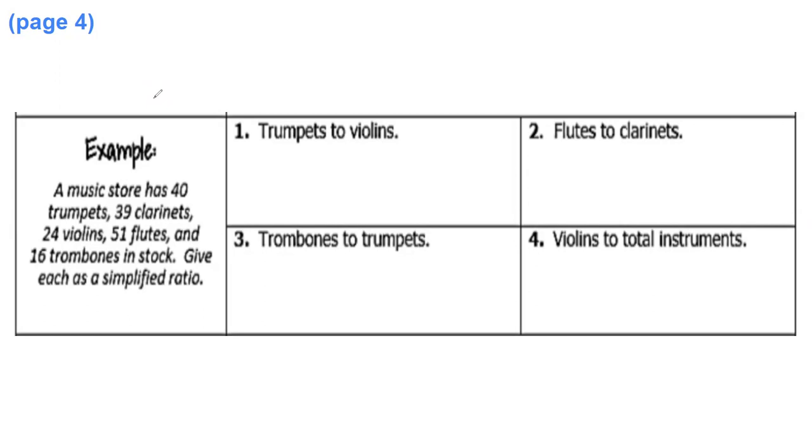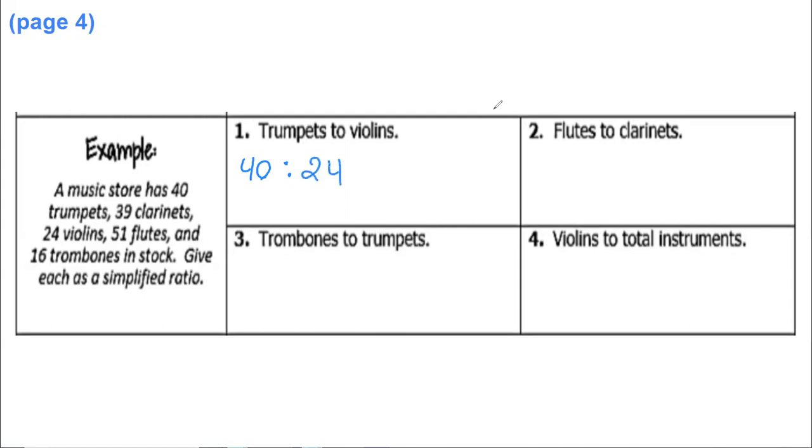So I'll kind of do one of each and then my favorite one for last. First we'll do colons: trumpets to violins. Well it says they have 40 trumpets to violins, we have 24. So a ratio would be 40 to 24, but you can simplify, right? So you want to fully simplify each ratio. So let's go ahead and do it. Instead of 40 and 24, those are both even numbers, so we can divide them both by two at least. So let's try that. So instead of 40 over 24, let's do, three by two is 20, and 24 divided by two is 12.